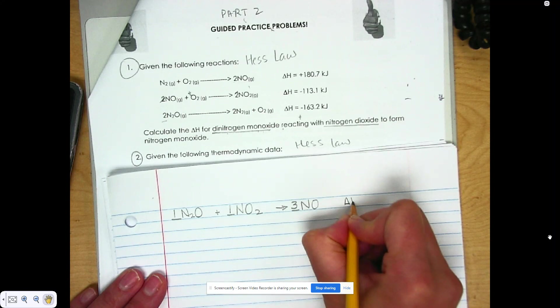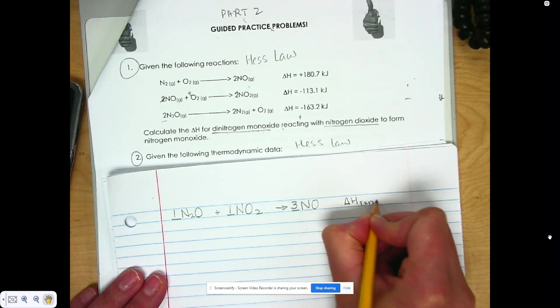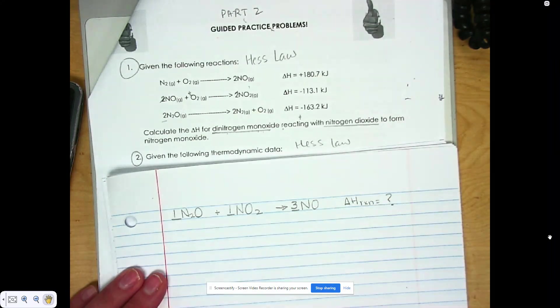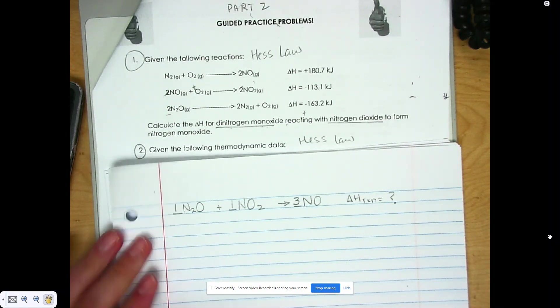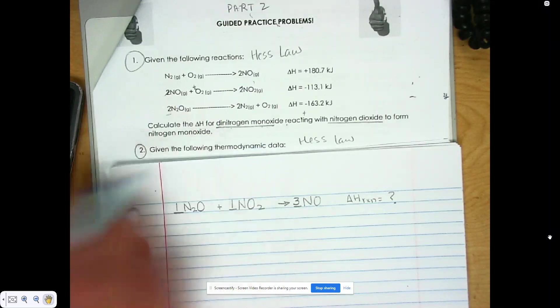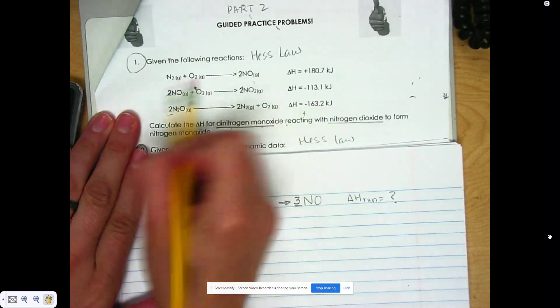So remember, the goal is to find the delta H of this reaction, which is unknown. Let's see if I use a different color. All right, we are given these three reactions for us to work with.